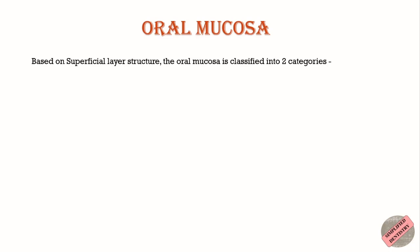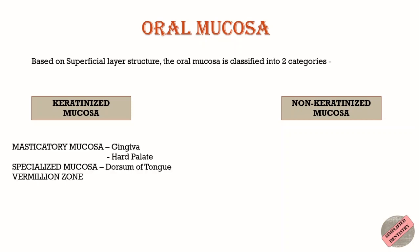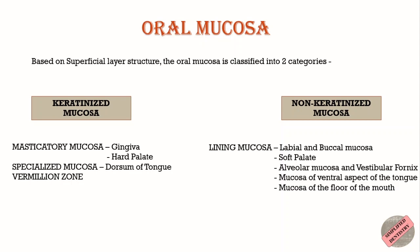Based on the superficial layer structure, the oral mucosa is classified into two categories: one is keratinized mucosa and the second is non-keratinized mucosa. I have already made a detailed video on keratinized and non-keratinized mucosa of the oral epithelium — I'll mention its link in the description box. Keratinized mucosa is present in the masticatory mucosa, specialized mucosa, and the vermilion zone, whereas non-keratinized mucosa is present in the lining mucosa.